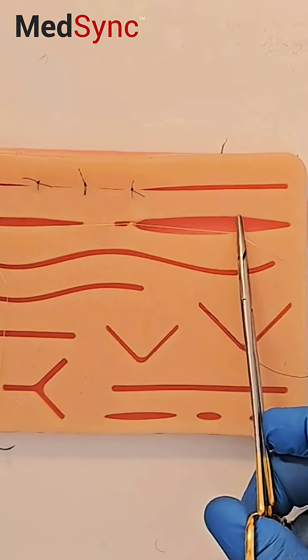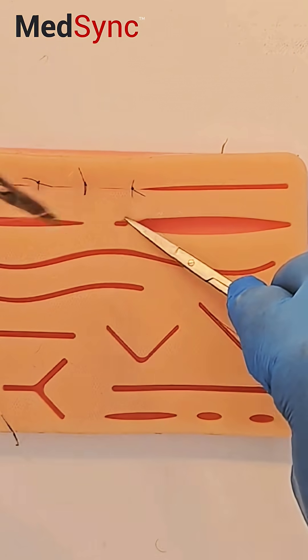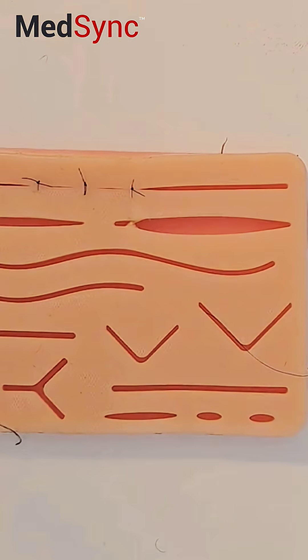So for the deep dermal, there's a buried knot, so you can cut this flush. I don't want to see the suture above the skin.